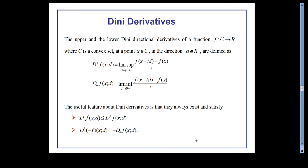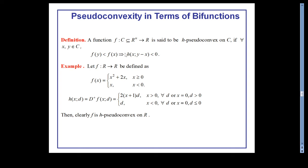We also need the concept of Dini derivatives. The upper Dini derivative and lower Dini derivative are defined along with their key properties. A function f is said to be pseudo-convex on C if whenever f(y) < f(x) implies h(x, y − x) < 0.